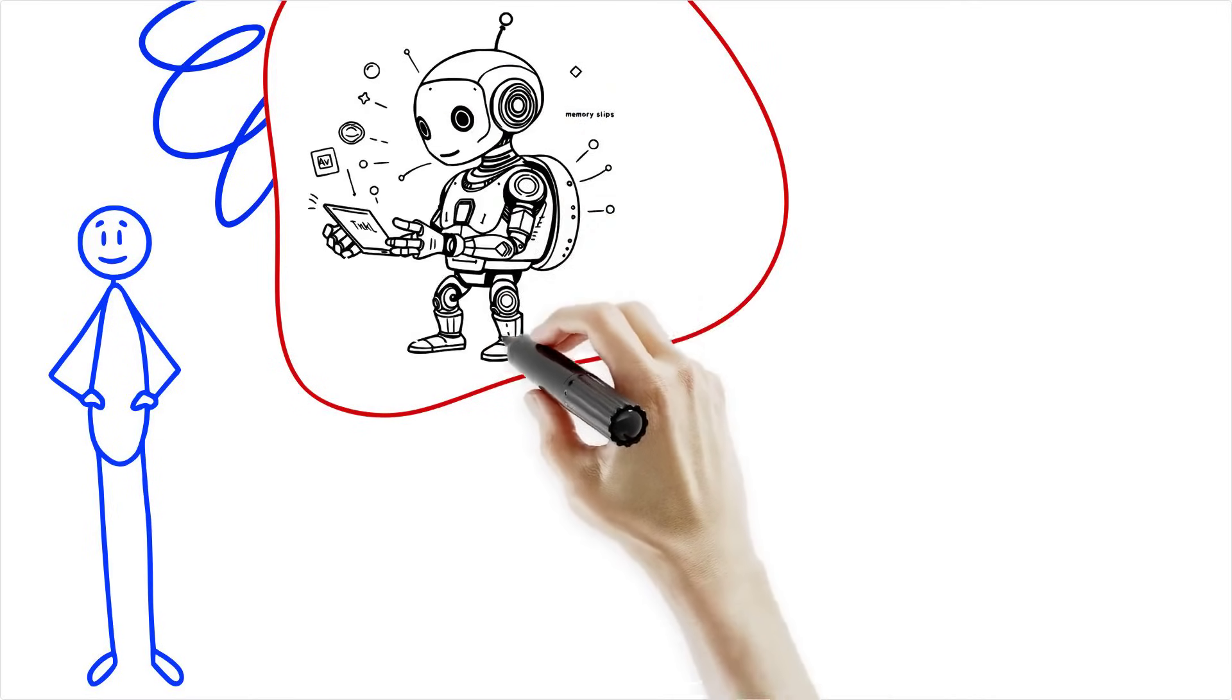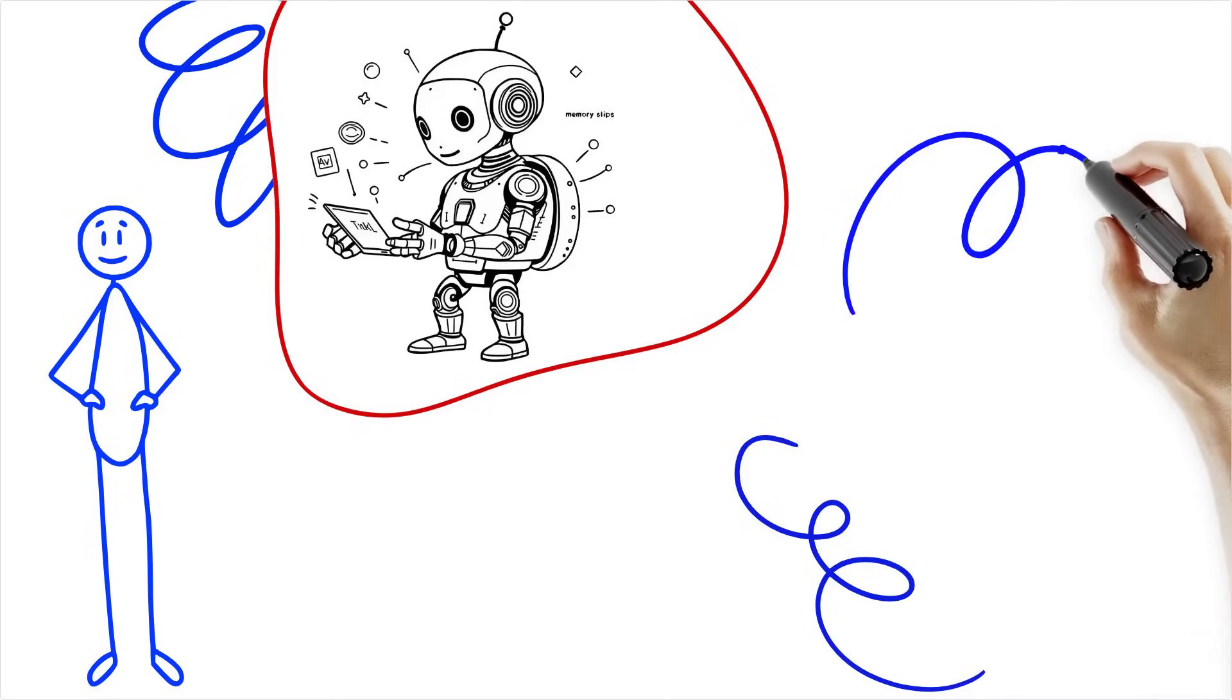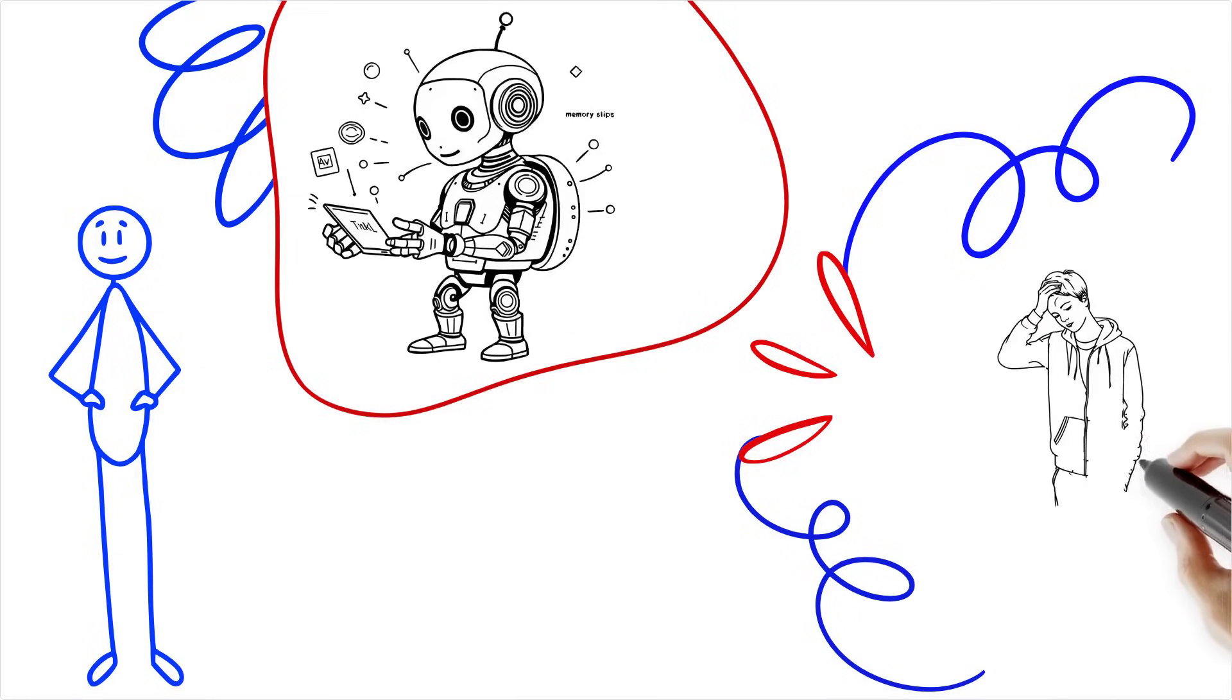GPT 4.5 sailed past that 50% mark. In fact, it got chosen as the human 73% of the time in some tests. Meanwhile, the poor actual human was asked things like, wait, are you a bot? You're too stiff. The irony is delicious.